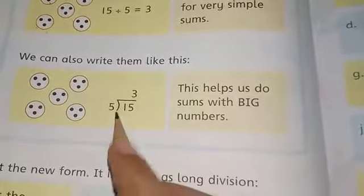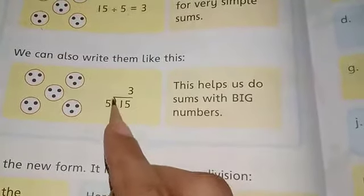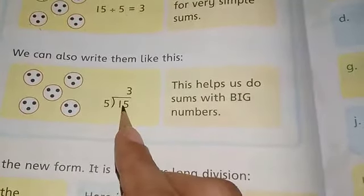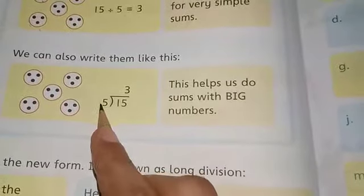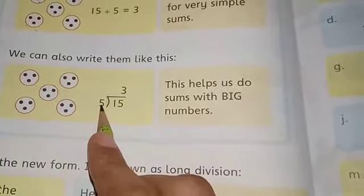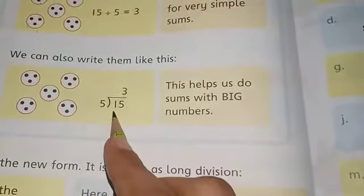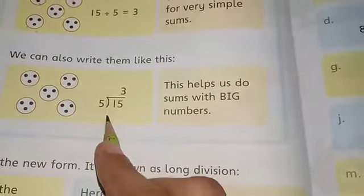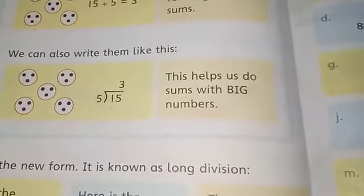You can write it this way. See, fifteen you will write here, 5 in bracket outside. Use 5's table: five threes are fifteen. Three, which is your answer, will come on top.